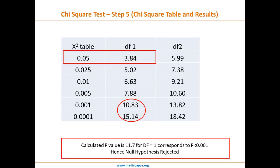This brings us to the end of chi-square. The five steps are: Step 1 — form a hypothesis; Step 2 — calculate the degree of freedom; Step 3 — calculate the expected values; Step 4 — calculate the chi-square value; Step 5 — match with the table and accept or reject the hypothesis.